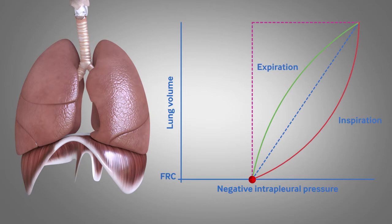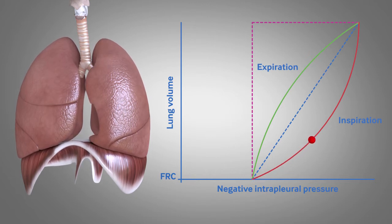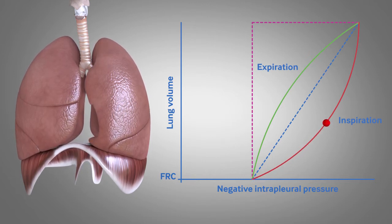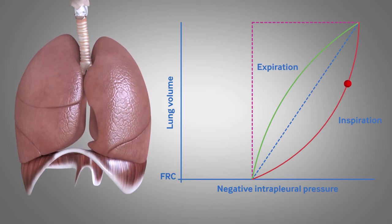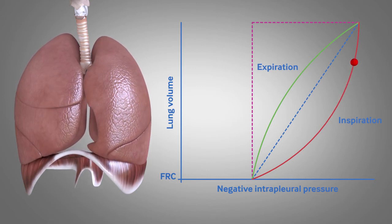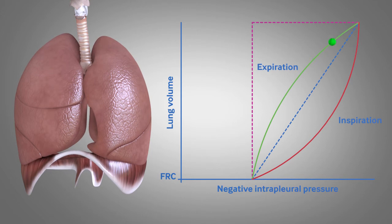The graph of intrapleural pressure plotted against lung volume can be useful to help understand the relationship between the pressure changes in the respiratory system and lung volume. The graph shows that as the pressure gets increasingly negative, as the diaphragm moves down and respiratory muscles pull outward on the chest wall, air enters the lung and lung volume increases.